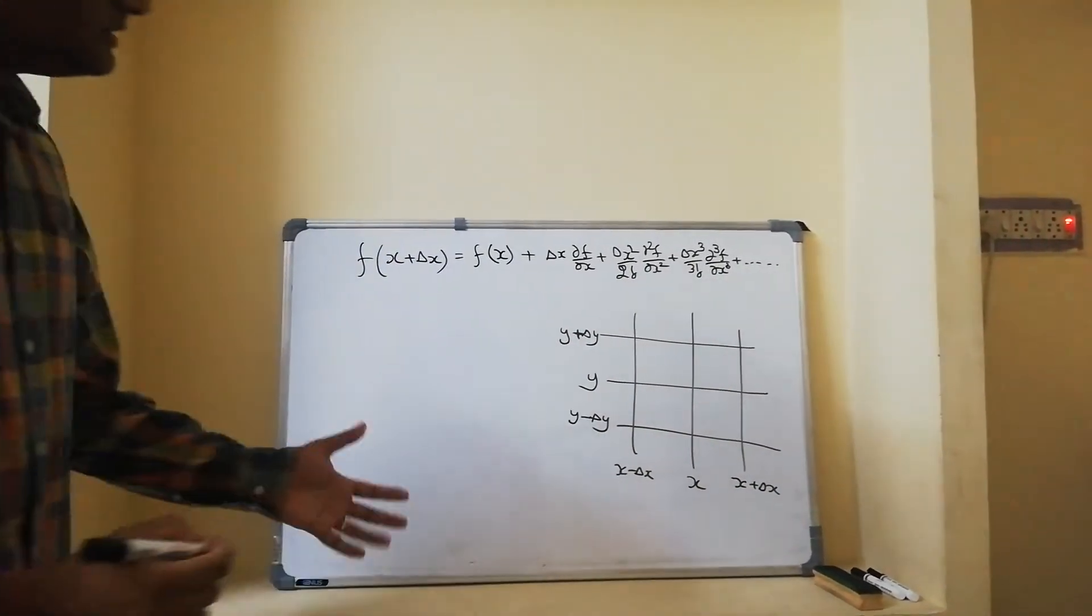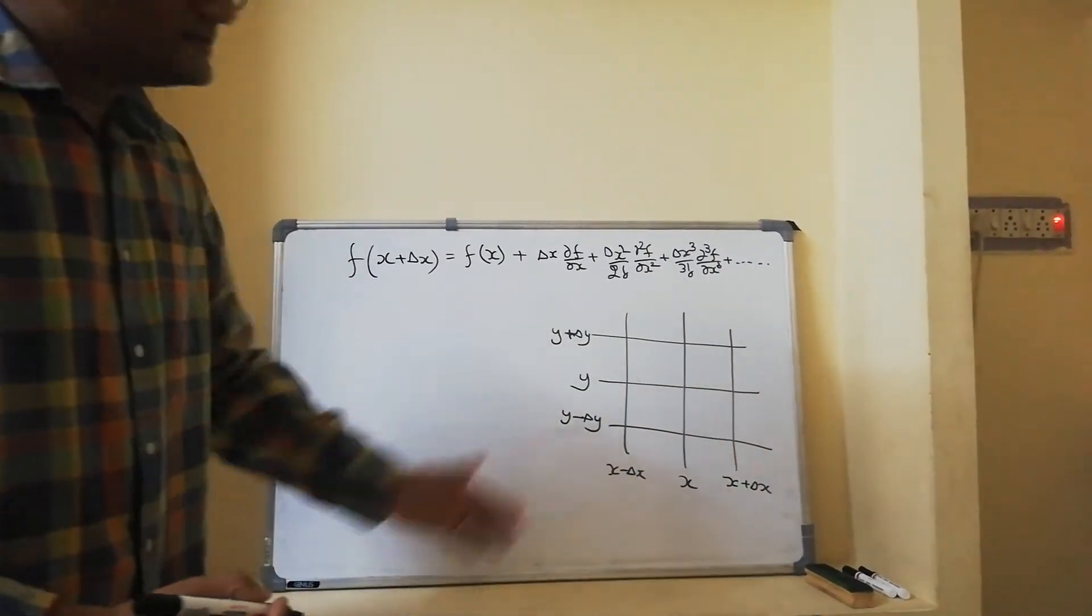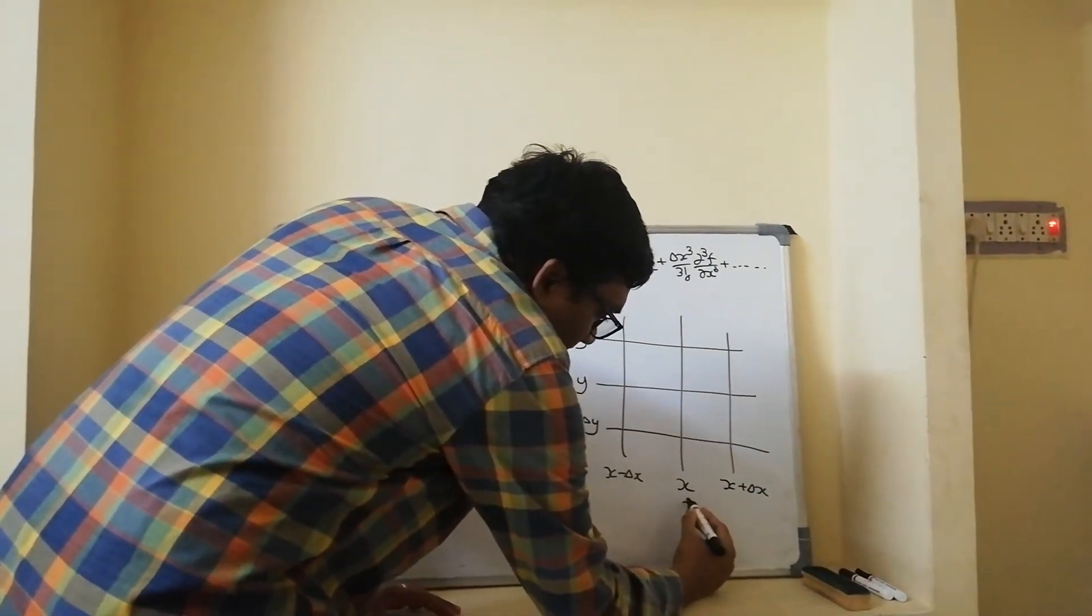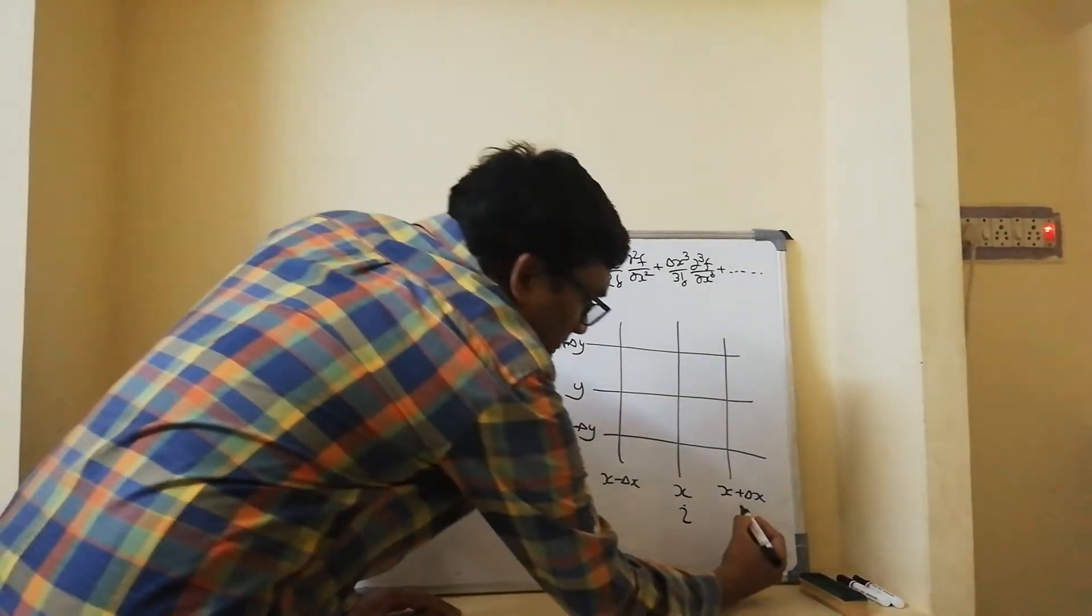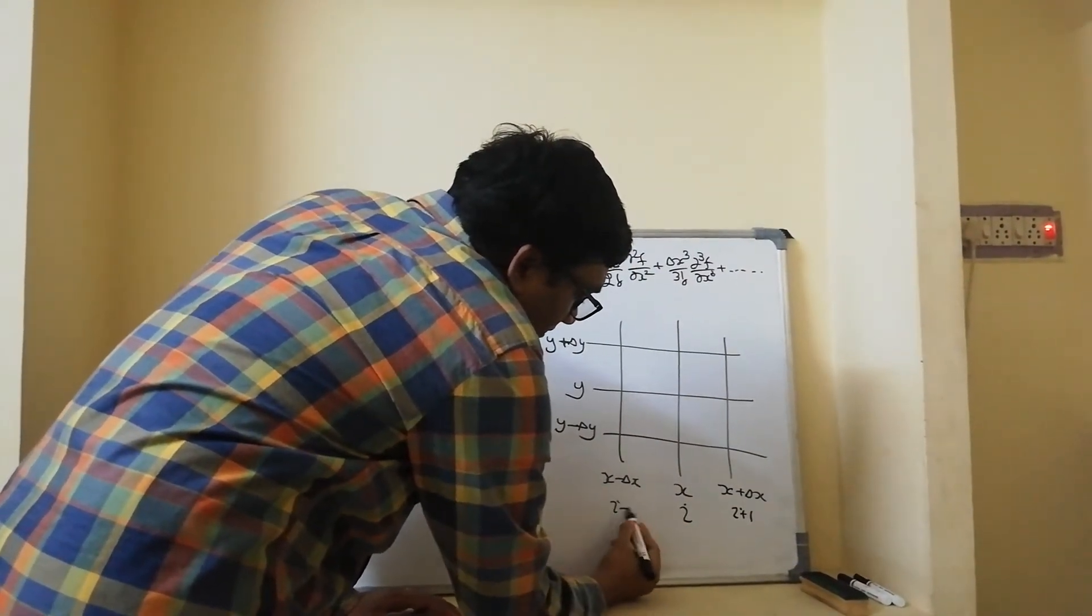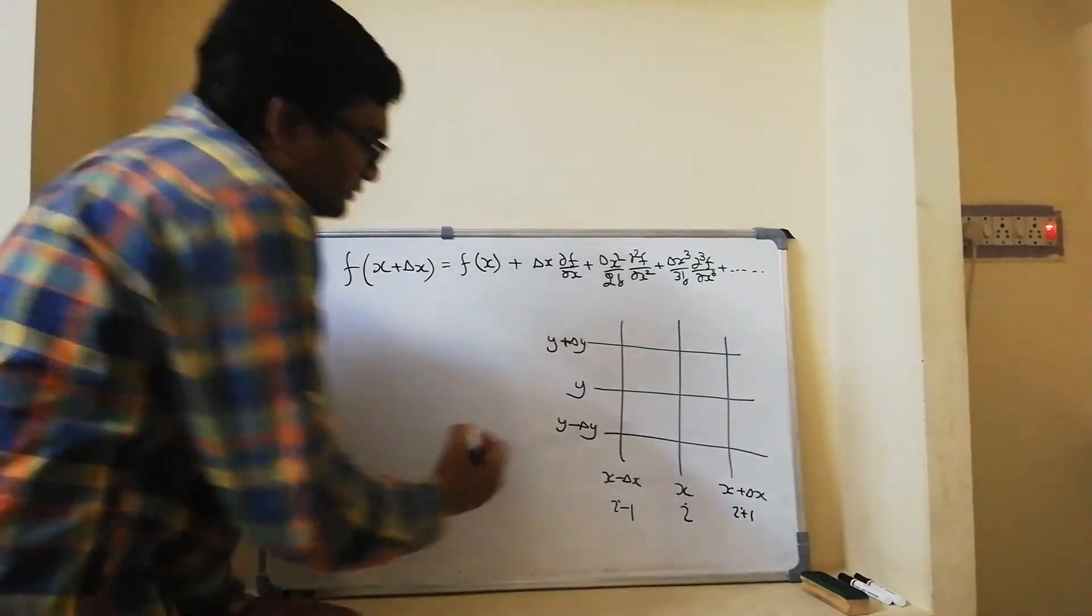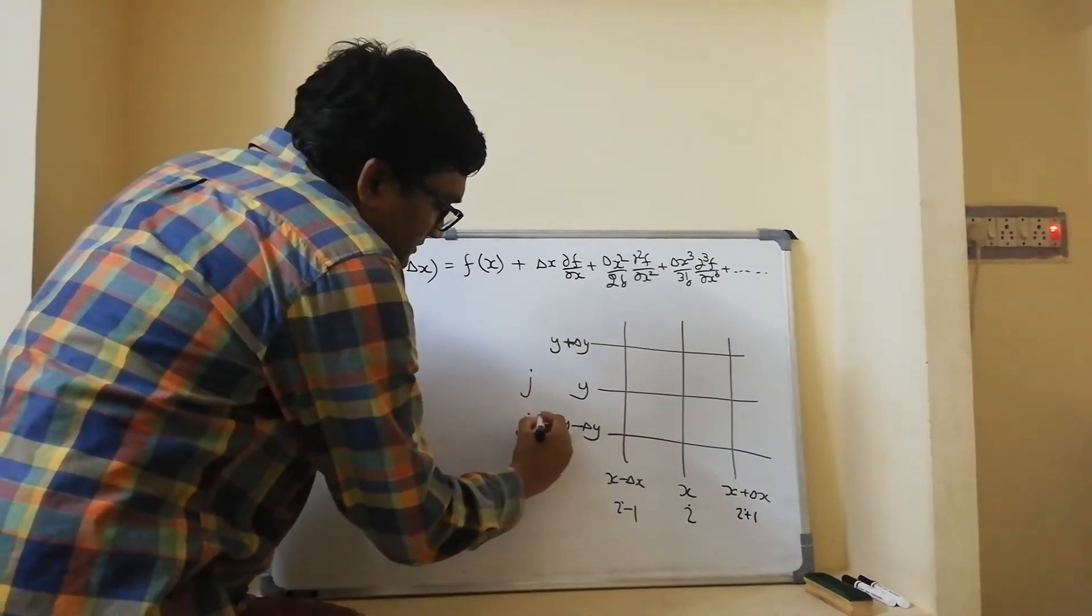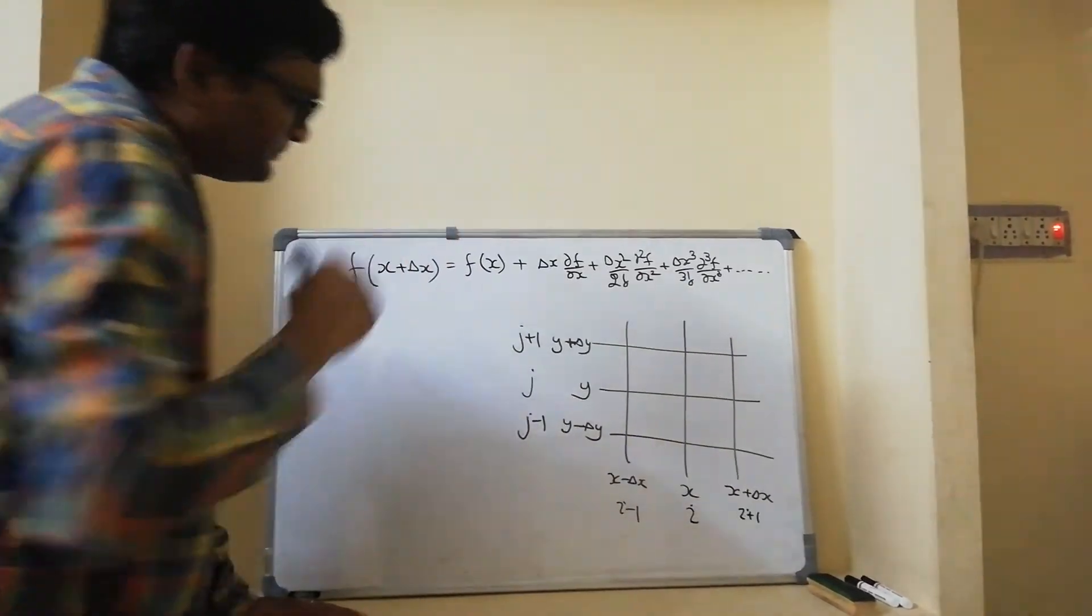It is convenient in CFD to denote all these locations with indices. Let's say I am denoting the x indices with i. Hence, this will become i plus 1 and the point left to i will be i minus 1. And let me denote all the y indices with index j. This would be j minus 1 point, j plus 1 line or points.